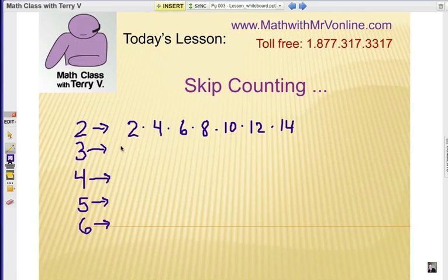How about 3? If we go 3, now we want to count every third number. So we go 3, 6, 9, 12, 15, 18, 21. 21 is my final number.